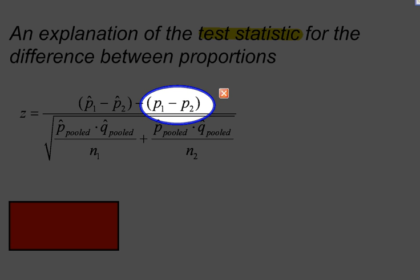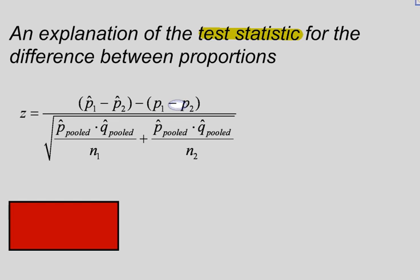So this part right here, p sub 1 minus p sub 2, the parameter for the first one minus the parameter for the second one, this most of the time is going to be equal to zero. So just keep that in mind.